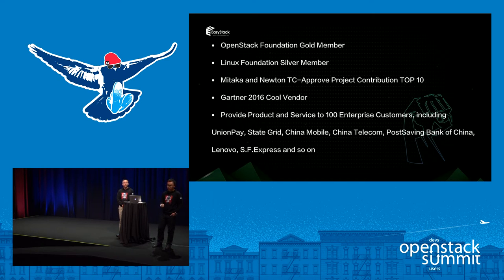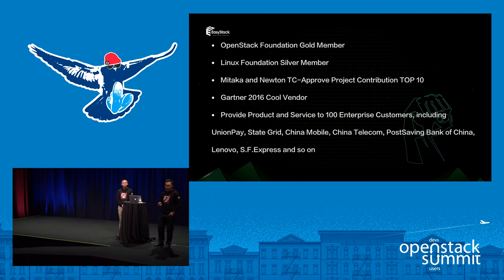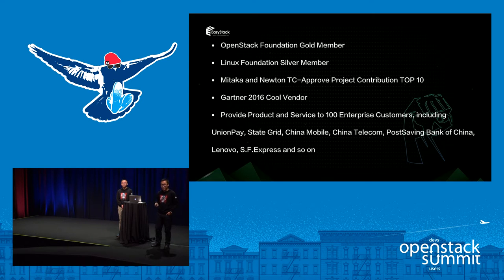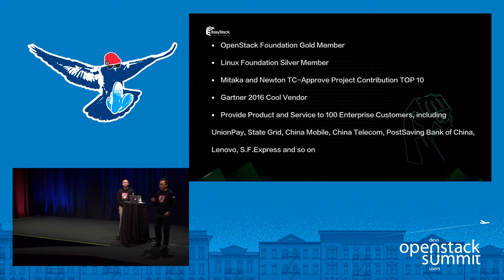We provide products and services to over 100 enterprise customers, including UnionPay, the State Grid, China Mobile, China Telecom, Post-Saving Bank of China, Lenovo, SF Express, and more. All these customers are the biggest enterprise customers in the China market. In previous OpenStack Foundation meetings, among the eight biggest customers in China, six of them are served by us and we provide production environments for them.